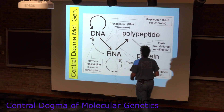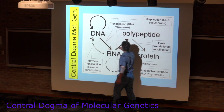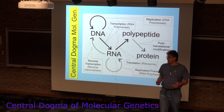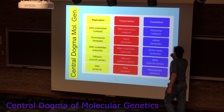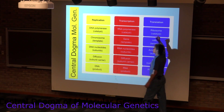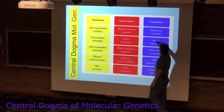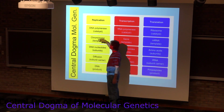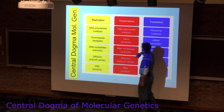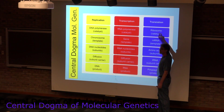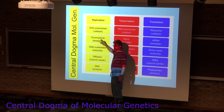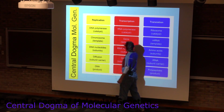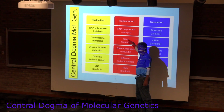The basic idea of replication, transcription, and translation is the central dogma. The catalysts that make this happen: the primary one for replication is DNA polymerase, for transcription is RNA polymerase, and for translation are the ribosomes. The templates: for replication it's the chromosomes, and for transcription it's the genes.